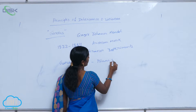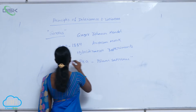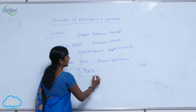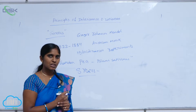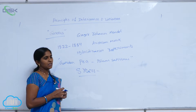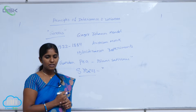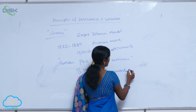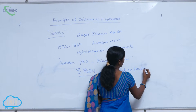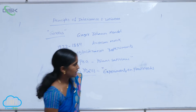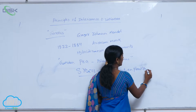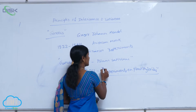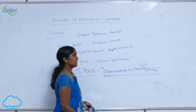Mendel selected the pea plant, Pisum sativum, for his experiment. He spent approximately 8 years on his hybridization experiments. He published his total experimental work in a paper titled 'Experiments on Plant Hybrids'. This paper documented all the results of his hybridization experiments.